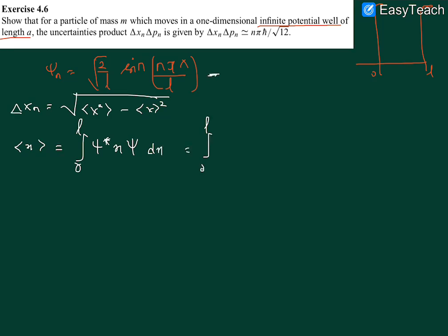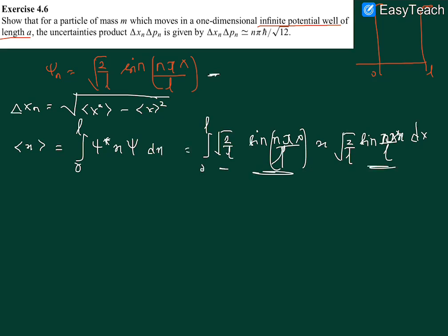The integral for the mean of x is from zero to L of psi star times x times psi dx. Since this is a real wave function, psi star equals psi, so we get the integral of (2/L) times x times sine squared of n pi x over L, dx. Squaring the terms gives us (2/L) times x times sine squared n pi x over L.